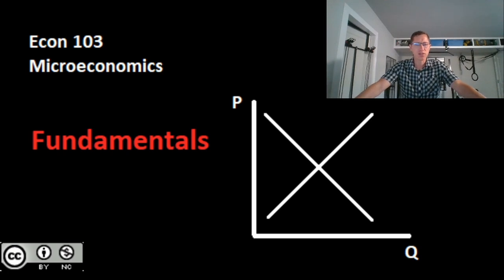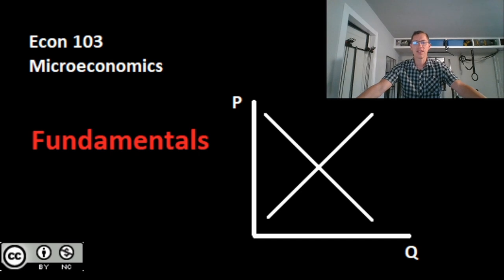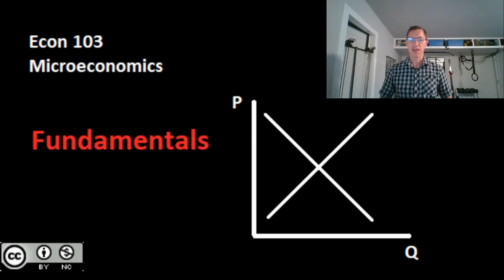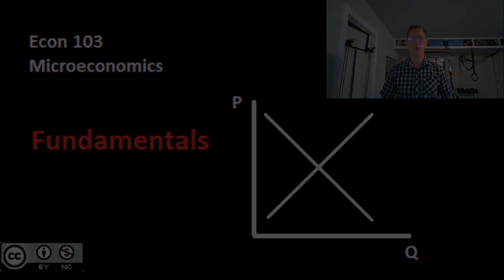One thing to think about as we start off is: what's the cost of you being here? Many people would say the cost of taking this course is the tuition and the time you're putting in. But we want to think about cost differently — what are you giving up by being here? What is the next best alternative you could be doing instead? That turns out to be a pretty fundamental idea in economics: opportunity cost, a big idea we'll flesh out today.